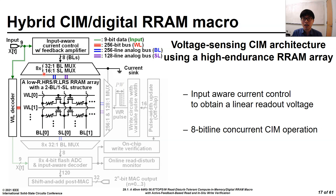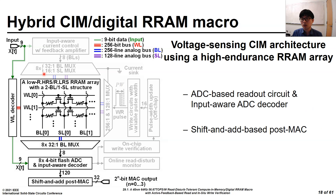The input-aware current control helps linearize the read-out voltage at bitlines. Through the bitline mux, 8 bitlines are selected for concurrent CIM operation. The read-out voltage, which is the result of CIM, is applied to the 4-bit ADC. Then, the input-aware ADC decoder generates the CIM output, which is the intermediate output of the system. The intermediate output is finally fed to the shift-and-add-based post-MAC block. Considering the MAC configurations, the final MAC operation is obtained in the post-MAC block.